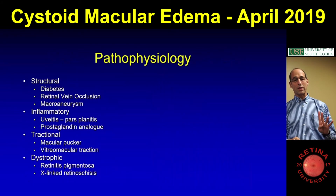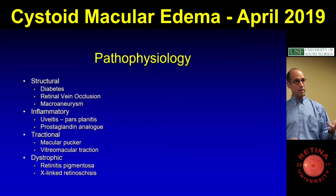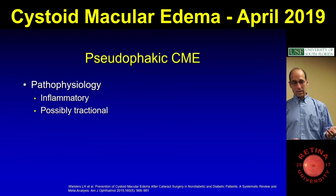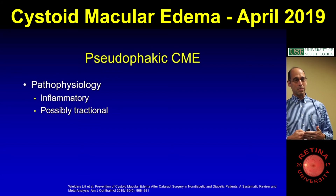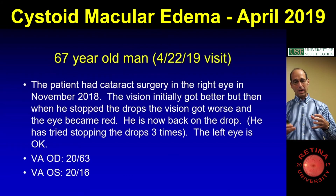So those are the four things: structural, inflammatory, tractional, and dystrophic. If you have macular edema, you can think about those things and then the subsets. Pseudophakic macular edema is probably mostly inflammatory. It might be a little bit tractional — if there's not a PVD, you might have these forces transmitting through.